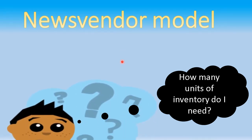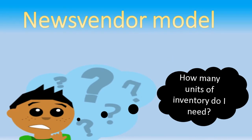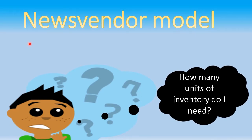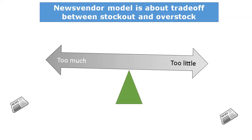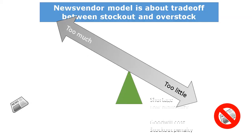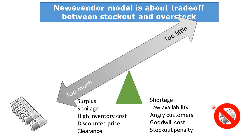In business we often ask this question: how much to order? The Newsvendor model is used in logistics to decide how many units of inventory to order when we have uncertain or stochastic demand. Stochastic demand means that it's hard to predict some value in the future. The Newsvendor model is about a trade-off between stock-out and overstock.